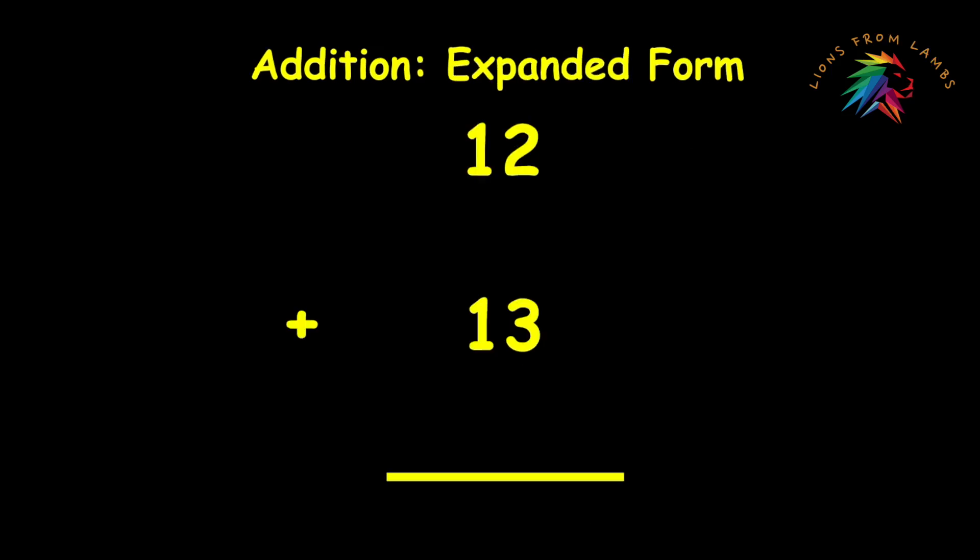Now if we want to look at this in expanded form we have to expand these numbers first. Remember expanded form means expanding the numbers out to where they are basically an addition sentence based on each place value. So when we expand 12 we expand that to 10 plus 2. 13 will expand to 10 plus 3. So when we look at these and we add up those place values we'll add the 2 plus 3 which will give us 5. Then we'll add 10 plus 10 which gives us 20.